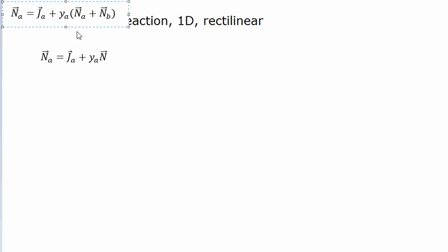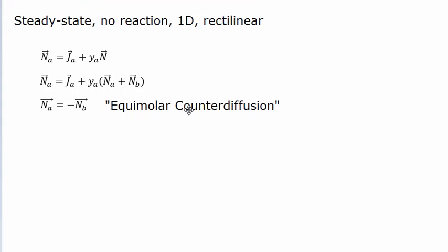Since it's a binary system, we can express N as the sum of N_A and N_B. And since it's equimolar counterdiffusion, N_A equals negative N_B, so we get a cancellation. What we get is that the total flux equals the diffusive flux and that there's no advection going on in the system.